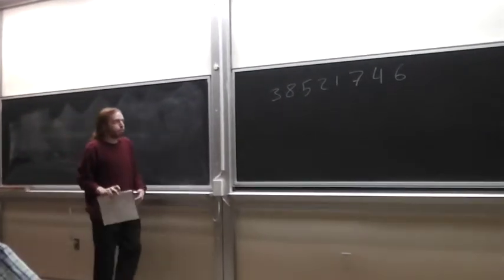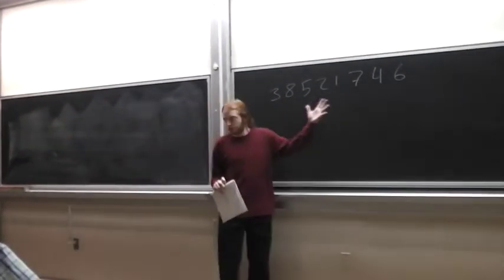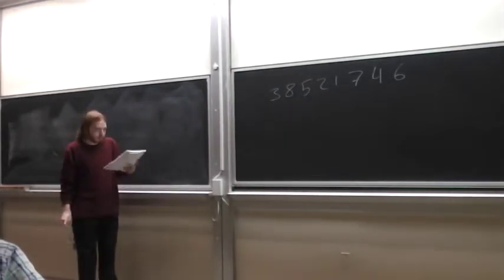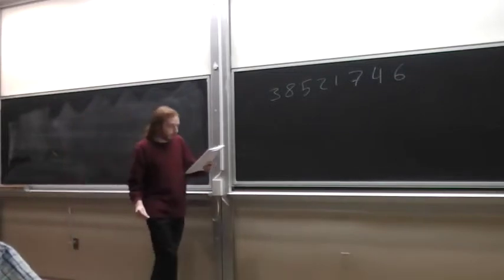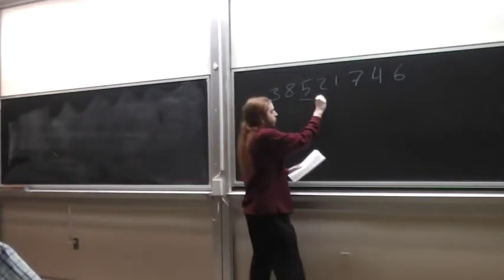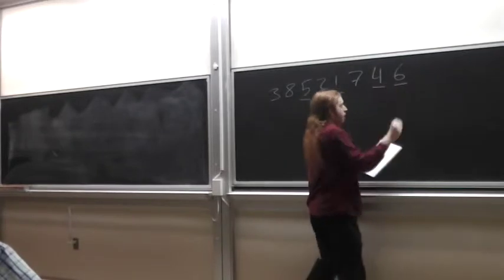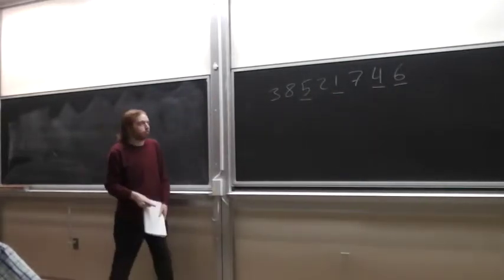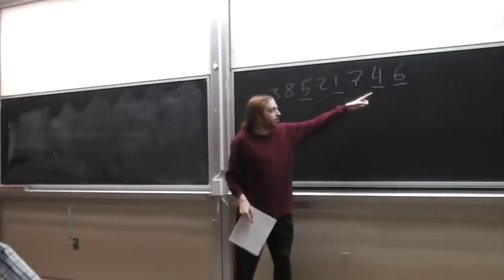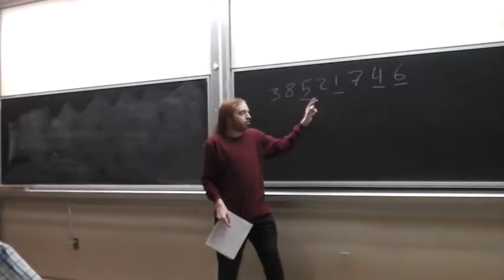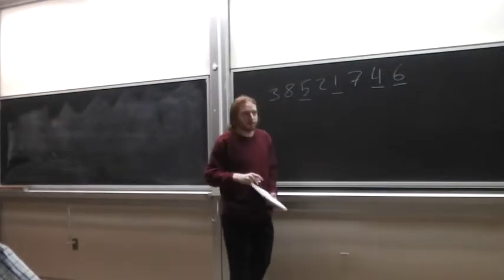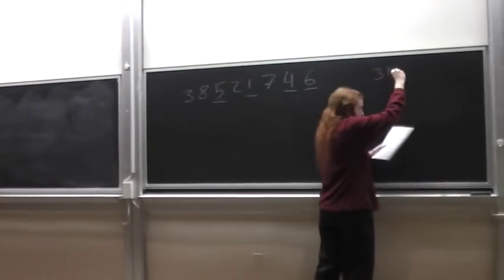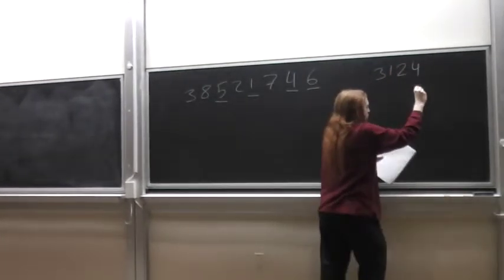And we're going to be looking at permutation patterns, which means we're going to be looking at subsequences of permutations and seeing what we can say about them. So here's a subsequence. And we'll look at the relative order of this subsequence. So this is the smallest, this is the second smallest, this is the third smallest, and this is the fourth smallest. And so we can summarize that by saying that this subsequence is a 3, 1, 2, 4 subsequence.